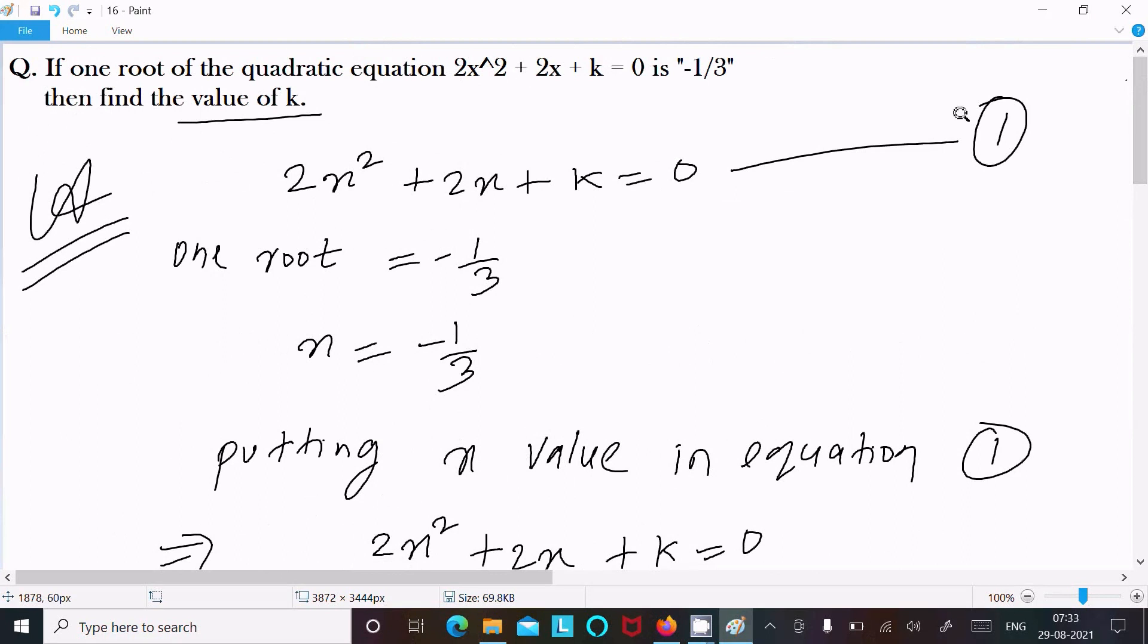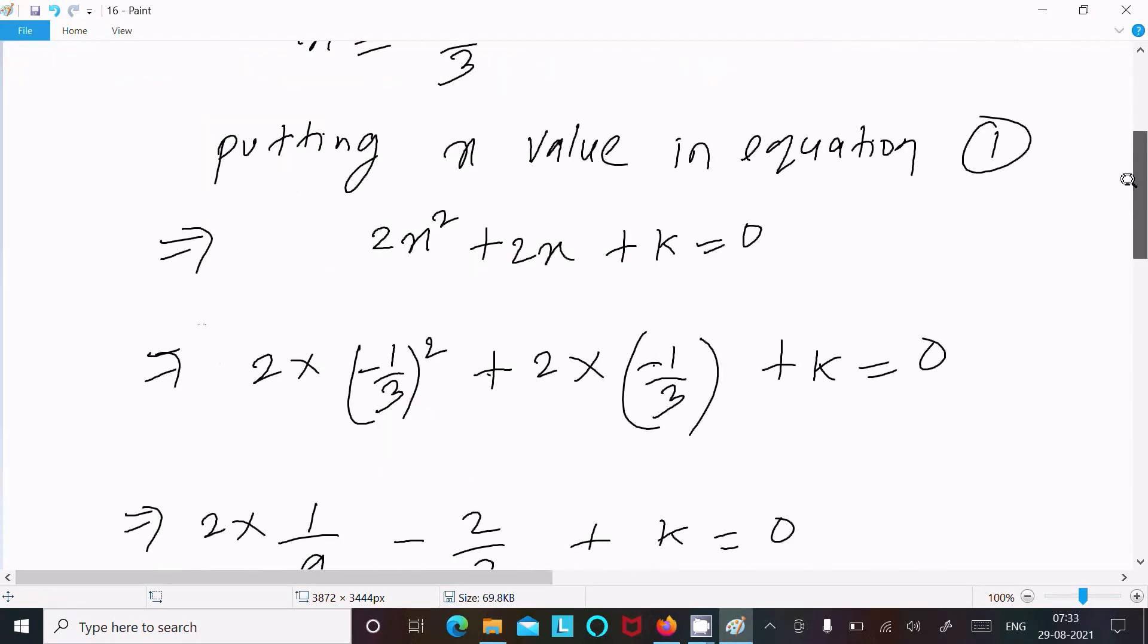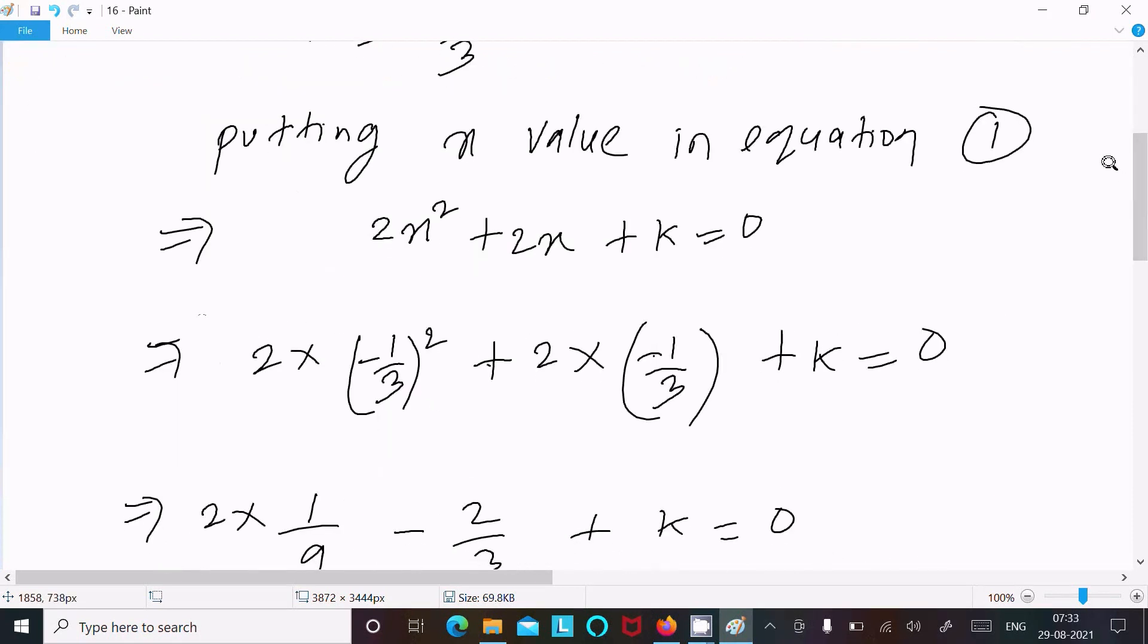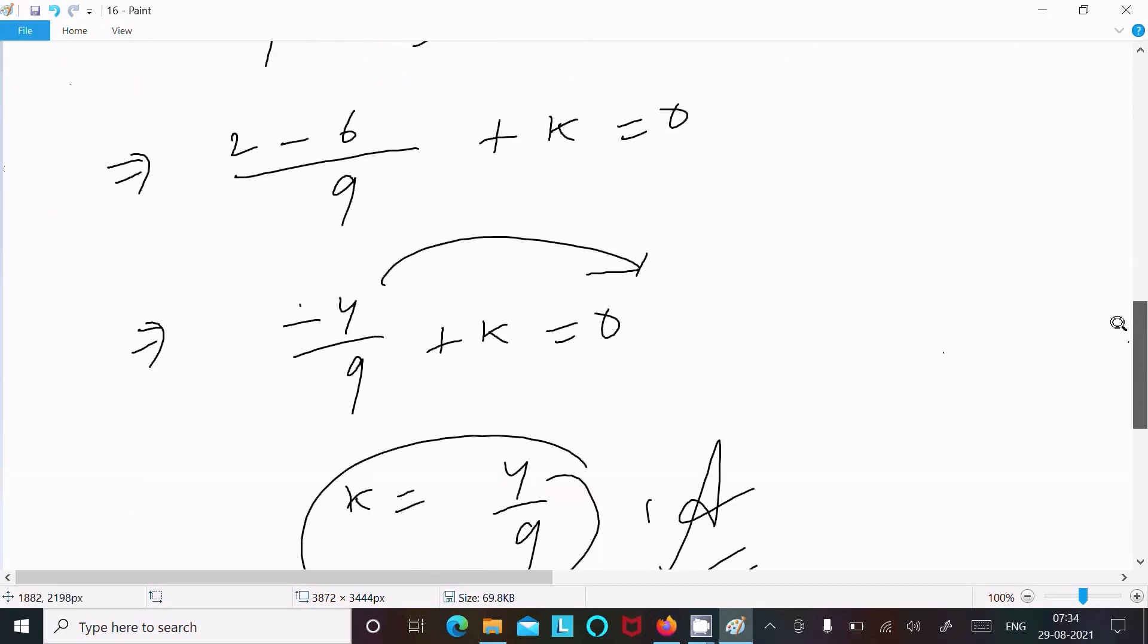One time going to repeat: write the equation here, one root given -1/3, so x = -1/3. Put the value of x in the equation, and after doing the calculation, k = 4/9.